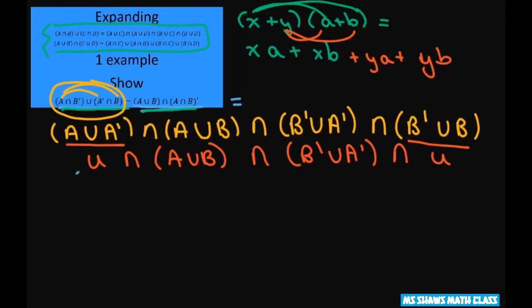So take these two together. The universal set and A or B is just going to be A or B. Then the same thing's going to happen here. When you intersect these two together, we're going to get B prime or A prime.